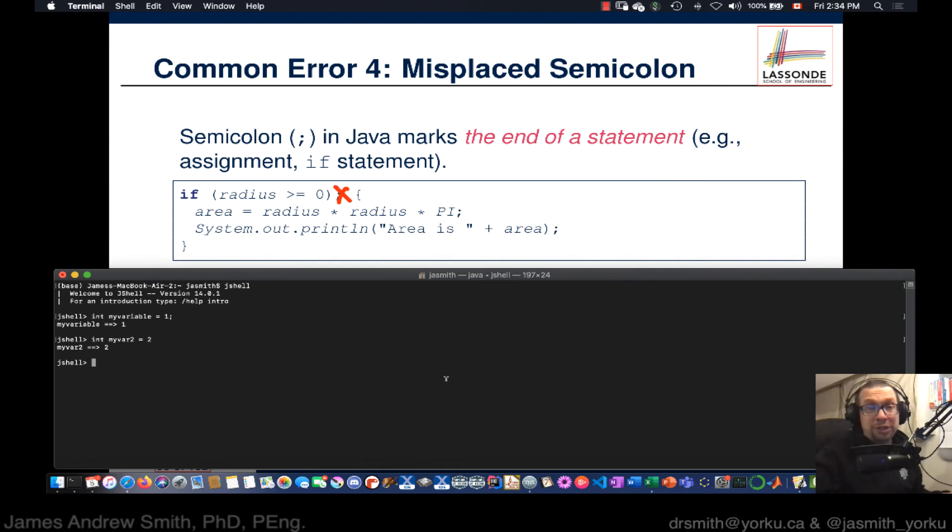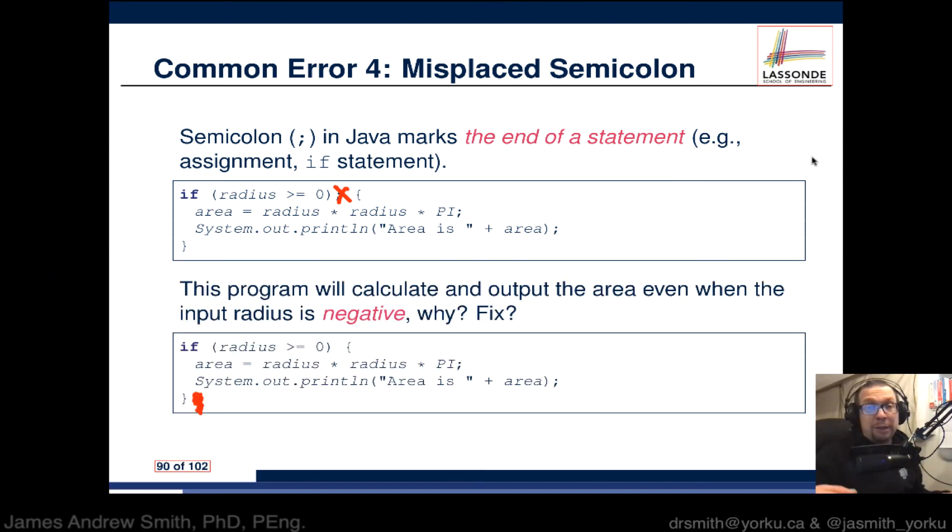When you're using the J Shell or writing programs in IntelliJ, Eclipse, or other IDEs, you always want to put the semicolon where it's supposed to go, which means most of the time at the end of a line, except in certain situations like this if statement.